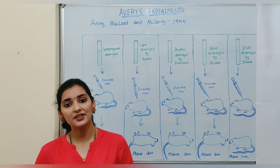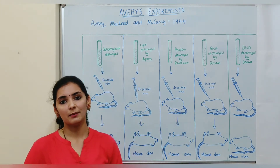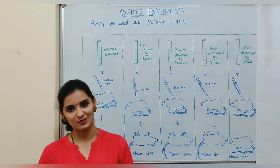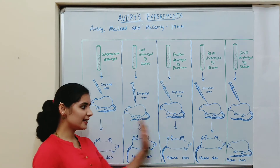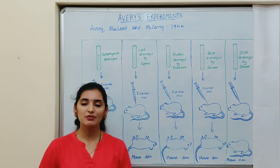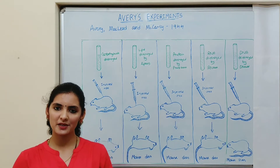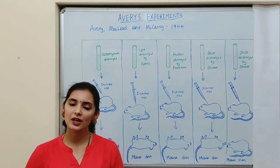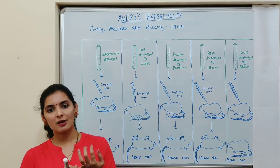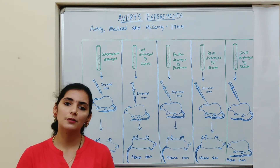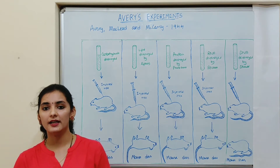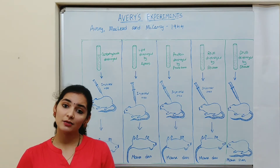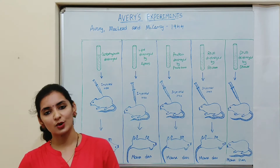16 years later, Avery and his colleagues conducted this experiment to explain the biochemical nature of the transforming principle — specifically to identify which molecular component is responsible for the transformation of R strain to S strain. The molecular component could be a carbohydrate, lipid, protein, RNA, or DNA — the question was which molecule is the transforming principle.